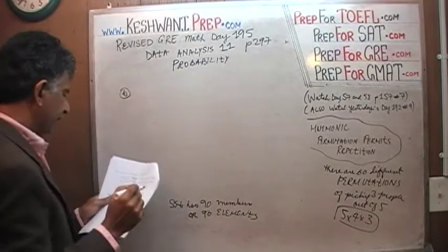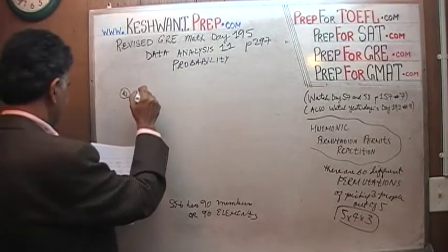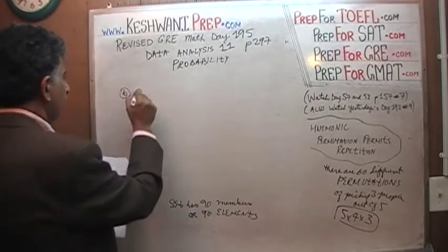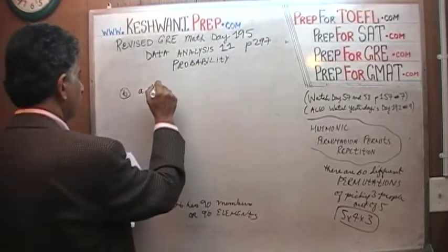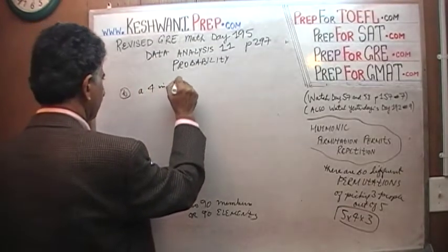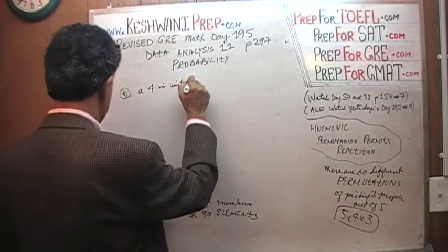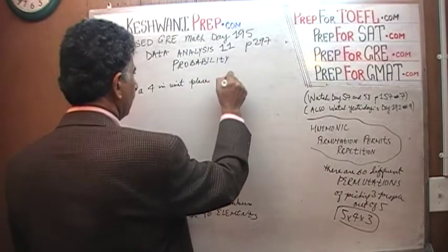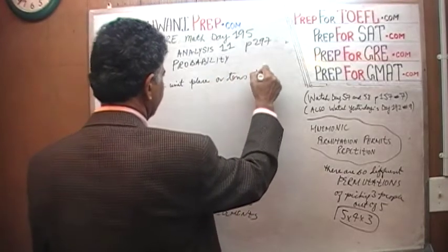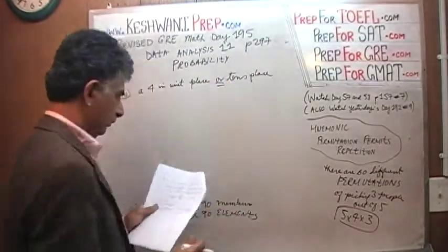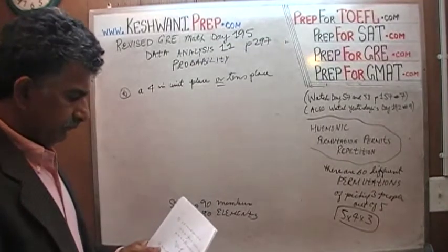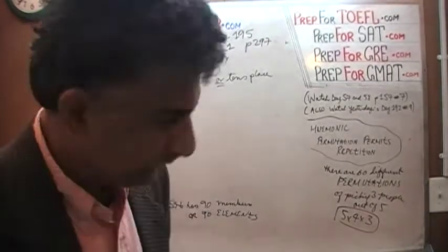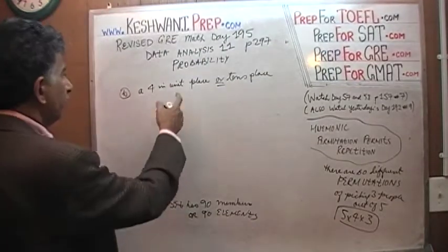In Part B, we are asked to find the odds of picking an integer at random which has a four in the unit place or in the tens place — or, not and.